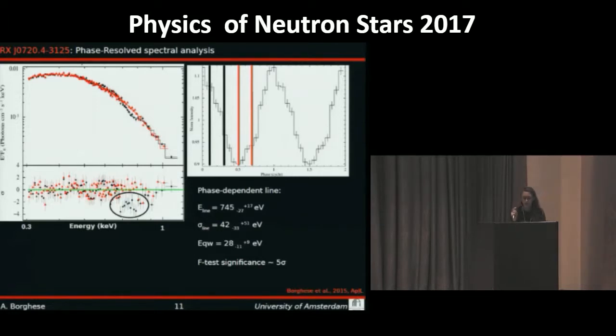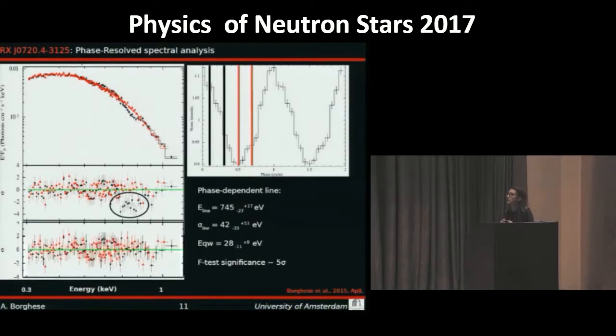On the residuals with respect to a simple black body model, we see that the red spectrum is well modeled by a black body. Instead, we can see some structure around 0.8 keV for the black model. In fact, the inclusion of a Gaussian line in absorption leads to an improvement in the residual of the spectrum.